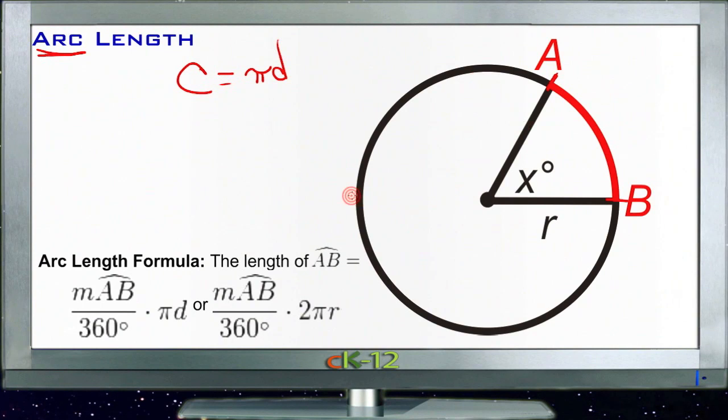If we knew the diameter of this example circle was 8 units, and we knew that this arc right here was 60 degrees, then we could calculate the length of this arc by first finding out what portion of the total circle 60 degrees is. We could do that by saying,